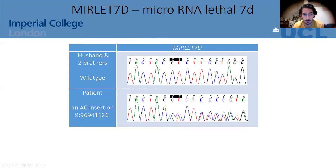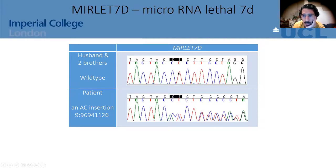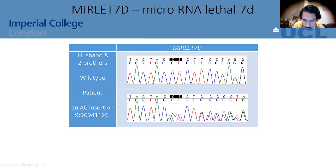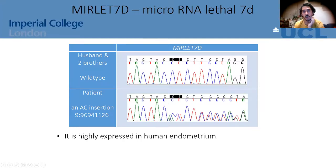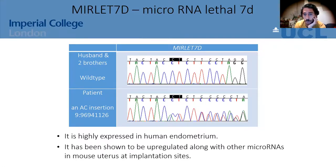The last gene of interest was microRNA-7d. The husband and two brothers were essentially wild type, whereas the patient has an AC insertion. Looking closely at the chromatogram, at one position you can see a blue and red peak in the patient, versus green and blue in the controls, indicating the AC insertion. MicroRNA-7d is highly expressed in human endometrium and has been shown to be upregulated along with other microRNAs in mouse uterus at implantation sites.